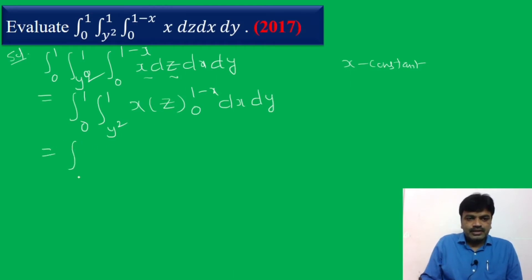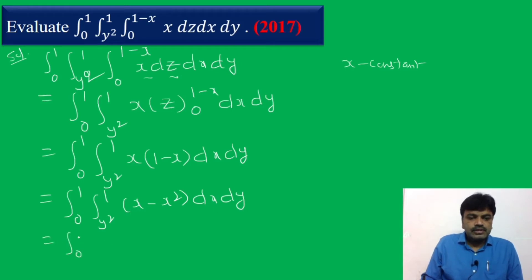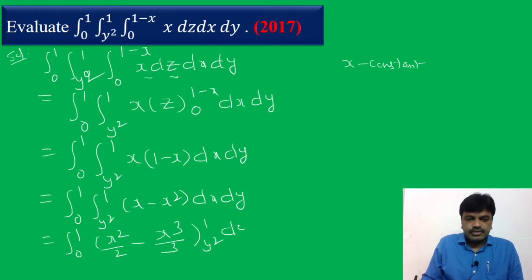That is equal to integral 0 to 1, integral y-squared to 1 — substituting upper limit 1 minus x and lower limit 0 — we get x into (1 minus x) dx dy. Multiplying out, we get x minus x-squared. That is equal to integral 0 to 1, integral y-squared to 1, (x minus x-squared) dx dy. Integrating with respect to x: integral of x is x-squared by 2, minus integral of x-squared is x-cubed by 3, between limits y-squared to 1, into dy.